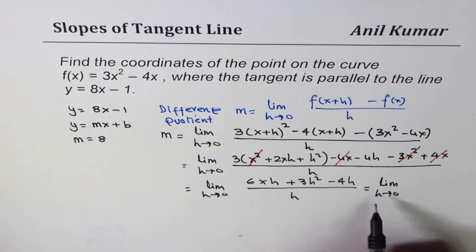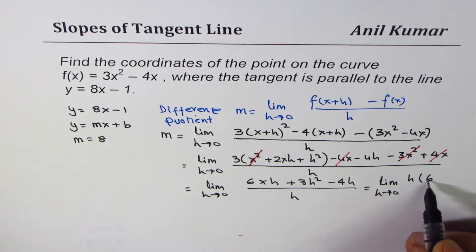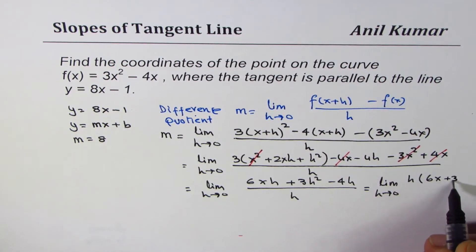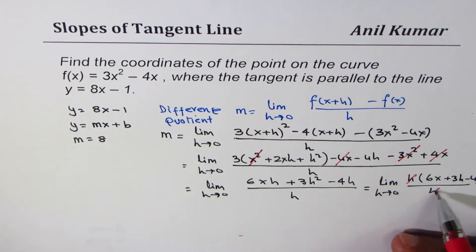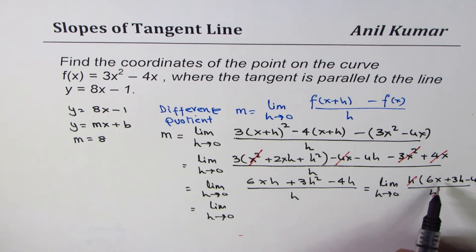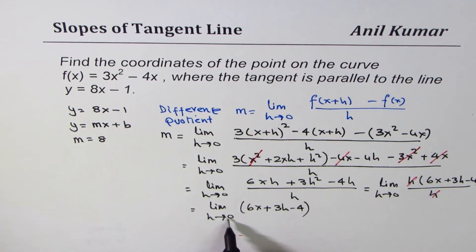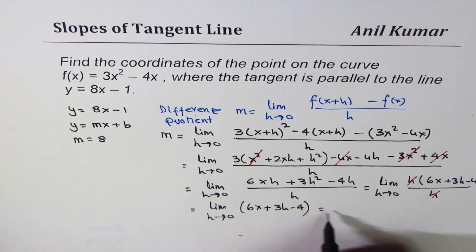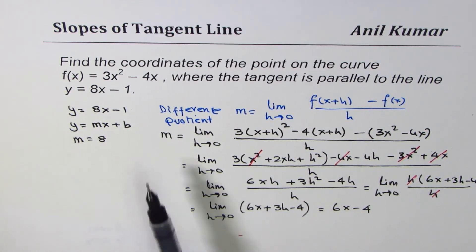Let's take h common first: h(6x + 3h - 4) divided by h. Now we'll cancel the common factor, that leads to lim(h→0) of 6x + 3h - 4. If I substitute h as 0, I get 6x - 4 as my general equation for slope at any point on this function.